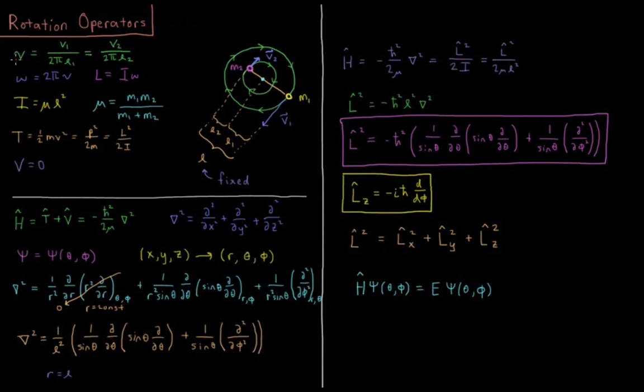So the frequency of rotation is the velocity divided by how far it has to travel to get how many units of rotation per second. So it's v1 over 2π L1, circumference of this circle, or v2 over 2π L2, circumference of this circle.